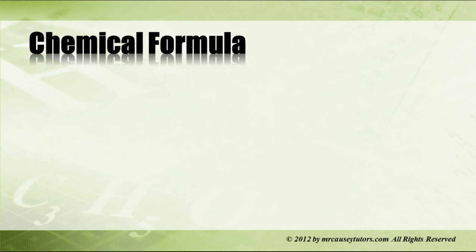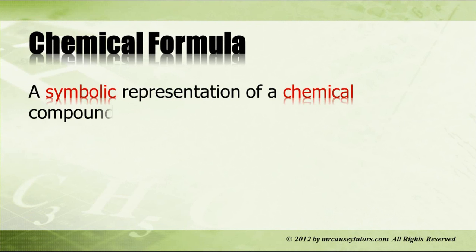So what is a chemical formula? A chemical formula is a symbolic representation of a chemical compound. Examples are KMnO4, H2O2, and NH3, which is potassium permanganate, peroxide, and ammonia.